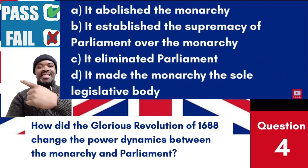Question 4: How did the Glorious Revolution of 1688 change the power dynamics between the monarchy and parliament? a. It abolished the monarchy. b. It established the supremacy of parliament over the monarchy. c. It eliminated parliament. d. It made the monarchy the sole legislative body. Answer: b. It established the supremacy of parliament over the monarchy. The Glorious Revolution significantly altered the balance of power, firmly establishing parliament's supremacy over the monarchy.